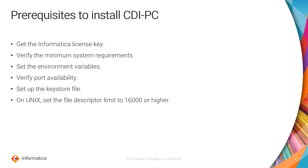Moving on to the prerequisites to install CDI PC: we have to get an Informatica license key and verify the minimum system requirements like RAM, CPU, and disk space. We have to set environment variables and verify port availability on the machine. We need to set up keystore files because the domain must be TLS enabled to install CDI PC, and we have to generate custom certificates — either self-signed or CA-signed. We also need to set the file descriptor limit to 16,000 or higher.